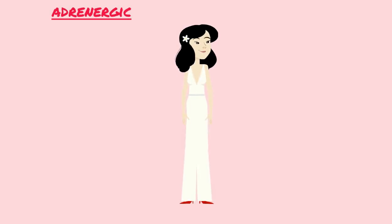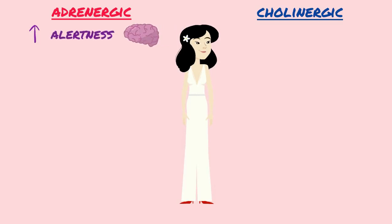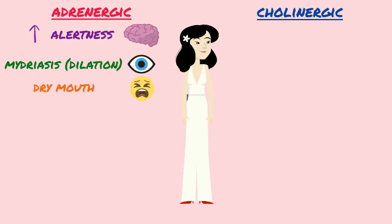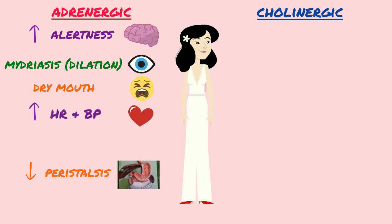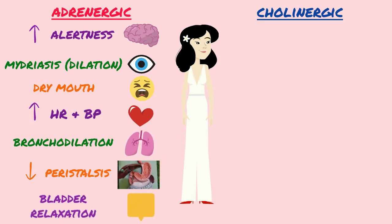Going from head to toe, I'll review some of the more common adrenergic and cholinergic responses throughout the body based on the locations where adrenergic and cholinergic receptor sites are found. In an adrenergic state, the brain and central nervous system will be in a heightened state. Pupils will dilate. Digestive processes are halted, leading to decreased salivation and decreased peristalsis. The heart rate and blood pressure increase, while the smooth muscle in the lungs relaxes, leading to bronchodilation. The bladder muscle relaxes and urinary sphincter contracts, allowing urine to fill.